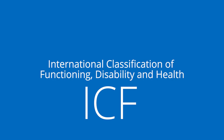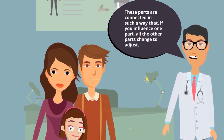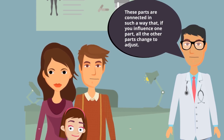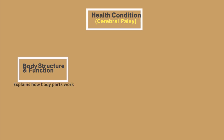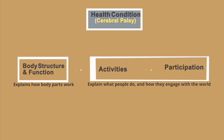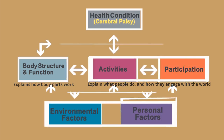The ICF divides a health condition — for example, in your child's case, cerebral palsy — into three interconnected parts. These parts are connected in such a way that if you influence one part, all the other parts change to adjust. First, the body structure and function, which explains how body parts work. Second, the activity and participation, which explain what people do and how they engage with the world. And third, the contextual factors, which include environmental and personal factors that help people function.